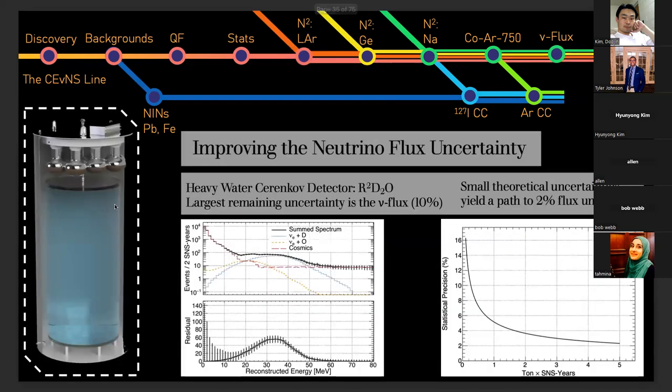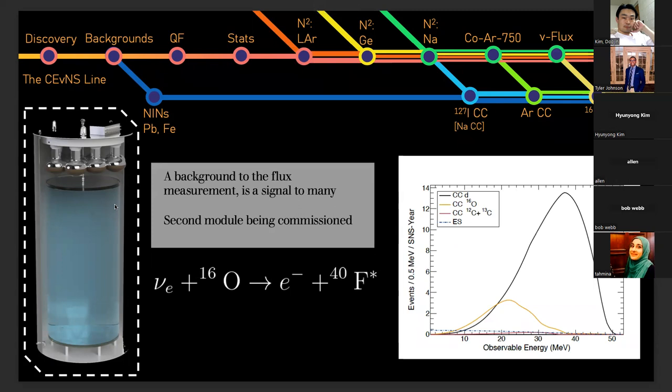So incumbent on the heavy water detectors, water has oxygen and therefore its own background, which would be charged current interactions on the oxygen-16 inside of it. If you look at the observed energy of the heavy water charged current and the oxygen, you can see that the electrons and the energy spectrum are overlapping. So this really requires us to dig deep into that interaction channel to make sure we understand it and get the first measurement on oxygen as well on the way to this measurement on deuterium to decrease this uncertainty to 2% to 3%.